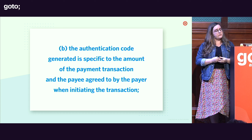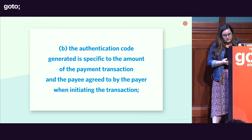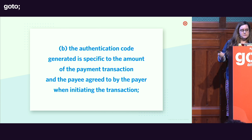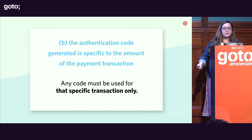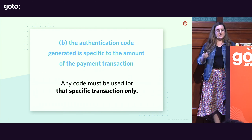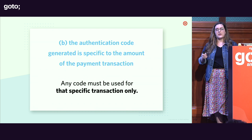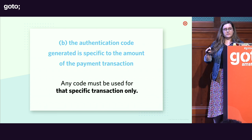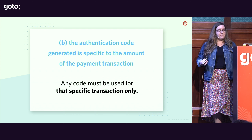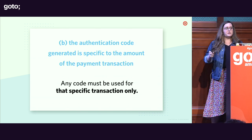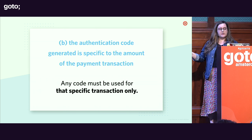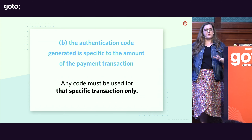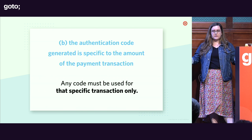Second, the authentication code generated must be specific to the amount of the payment transaction and the payee agreed to by the payer when initiating the transaction. Any code used to authenticate a transaction must only be used for that transaction. You don't actually need to derive that code from the transaction details — it can be a randomly generated number. You just need to maintain a reference between that specific payment and the code you generated, for example using a UUID tied to the six-digit code sent to the payer.